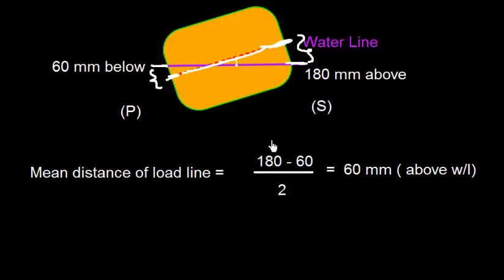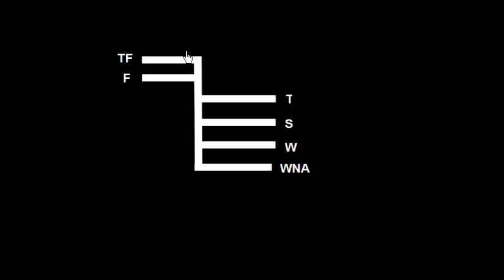Which can be calculated as mean distance of load line is 180 above minus 60 below, because one is above one is below, divided by 2, which gives me 60mm above. Why above? Because 180mm is above.